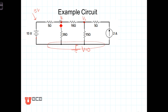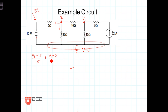Starting at the left node, summing the currents: the current leaving that node going to the left equals the current going through that resistor. The current through that resistor equals the voltage drop across it divided by the resistance, so that's V1 minus 15 volts, divided by 5 ohms. The current coming down through the 20-ohm resistor is V1 minus 0, divided by 20 ohms. The current leaving this node going to the right is V1 minus V2 divided by 10 ohms. The sum of those three currents equals zero.